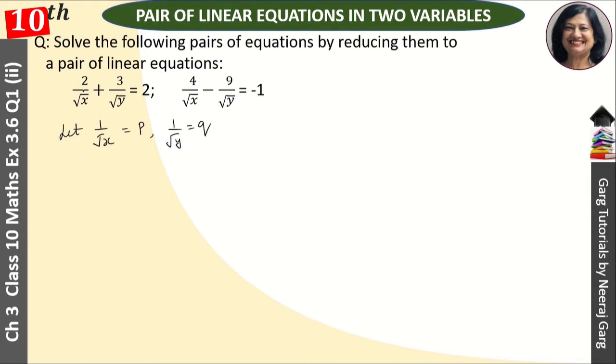When we put value in this equation, how much will it be? 2p plus 3q is equal to 2, and the second equation is 4p minus 9q that is equal to minus 1. This is our first equation and this is our second equation.